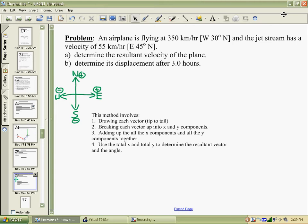To frame the problem, we have an airplane that's flying at 350 kilometers per hour west 30 north, and a jet stream is acting upon it with a velocity of 55 kilometers per hour east 45 north. I want to know the resultant velocity of the plane, and then determine its displacement after three hours. I believe I'm going to need two videos to do this, so in part one we'll see how far we can get along.